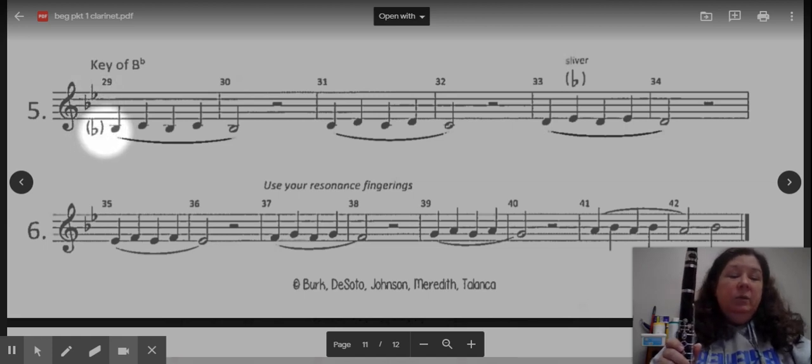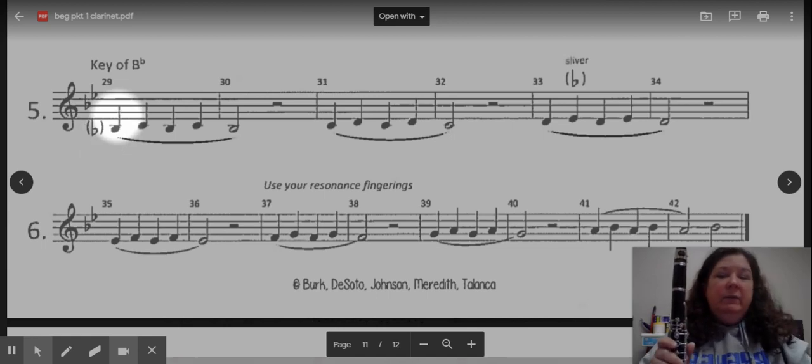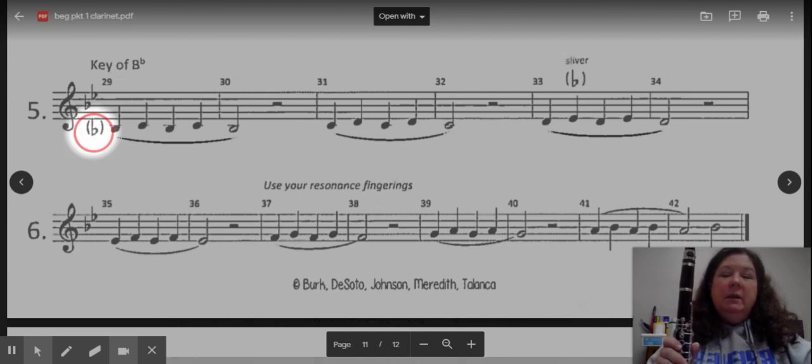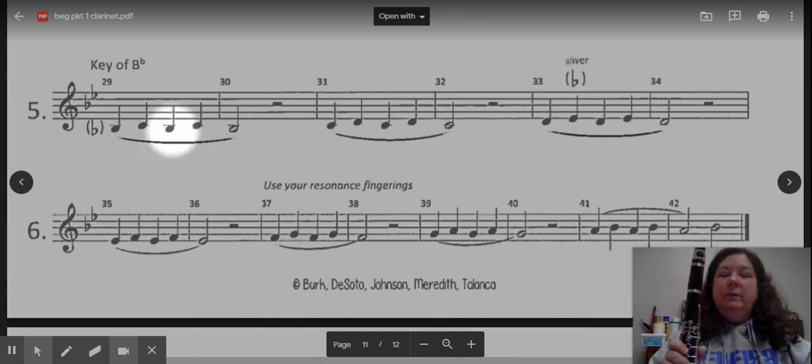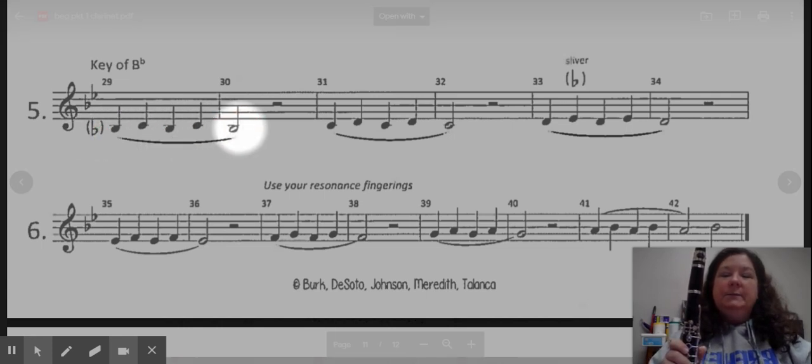So I want to scan through. Do I have any of those? And I do. Right off the bat here, I have a B flat, and the publisher has indicated as a reminder in parentheses. Hey, that's a B flat. So B flat here, B flat, and B flat.